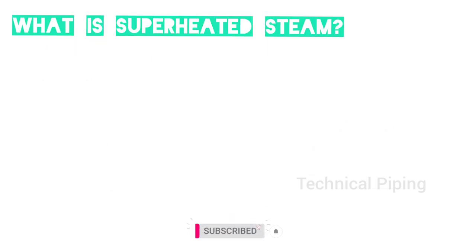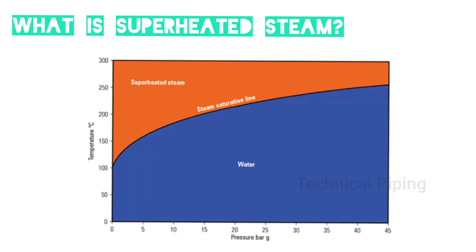Let's know what superheated steam is. The relation between saturated steam temperature and pressure is governed by steam properties. For example, steam at a pressure of 10 bar has a saturation temperature of 184.12 degrees Celsius. When more heat is added to the steam, it becomes superheated steam.